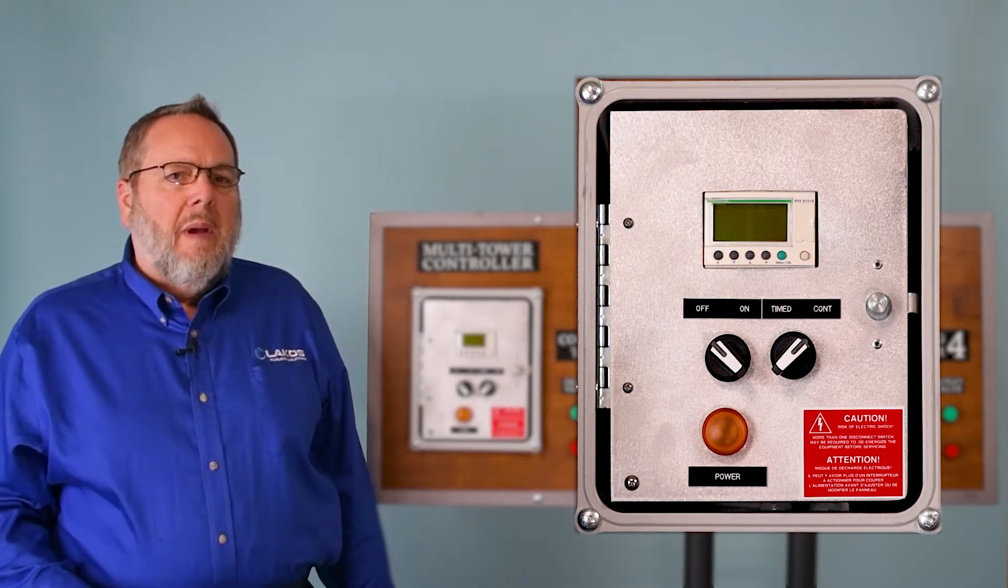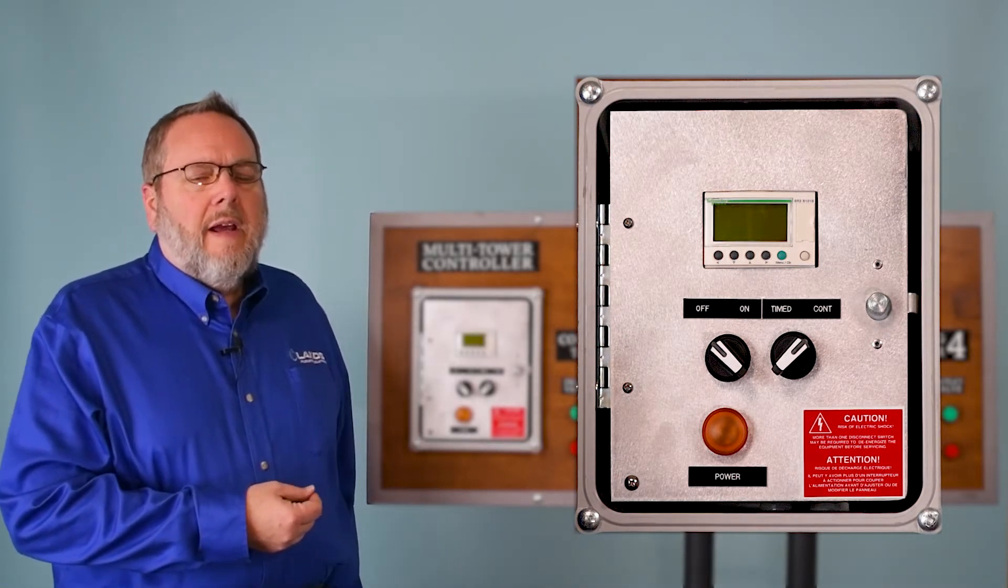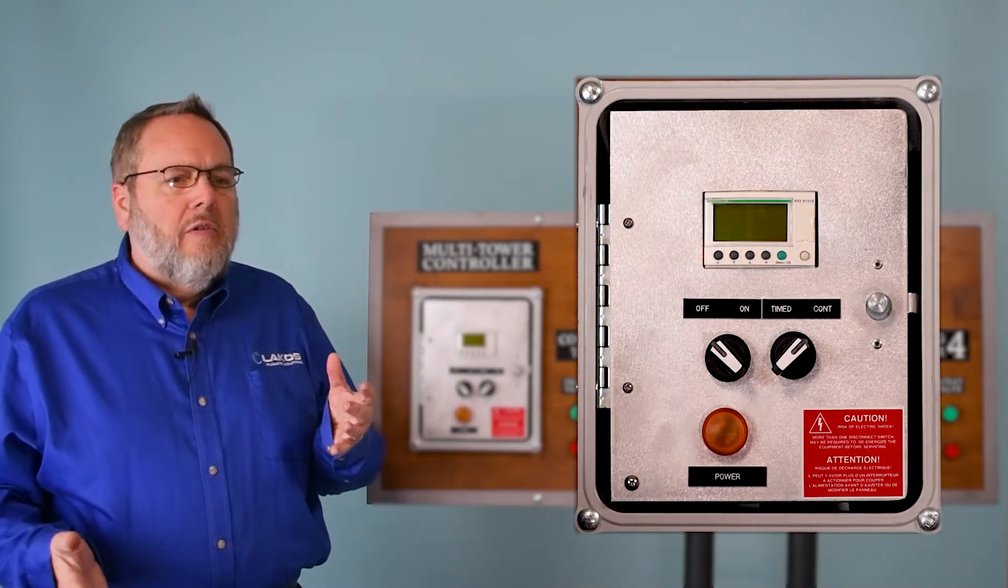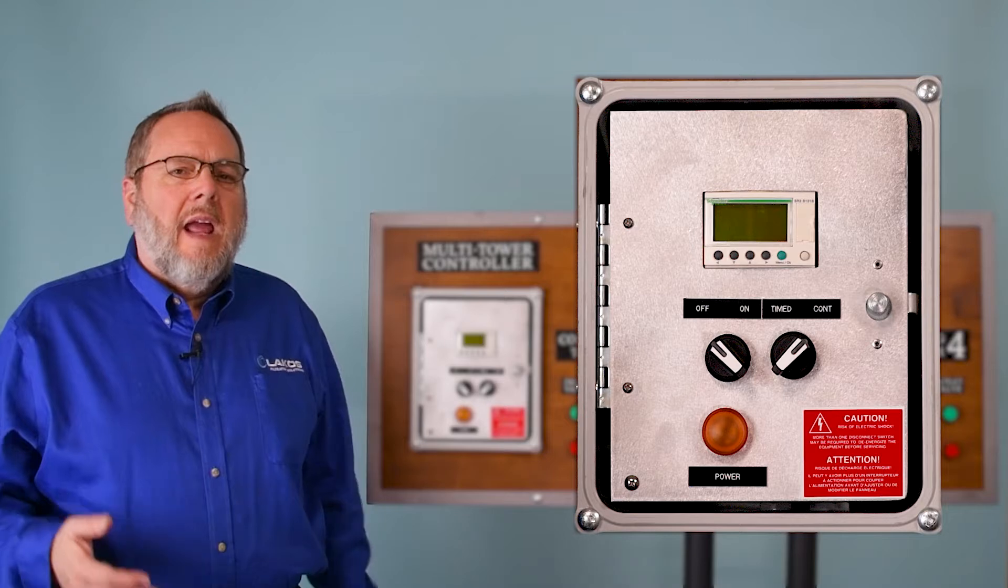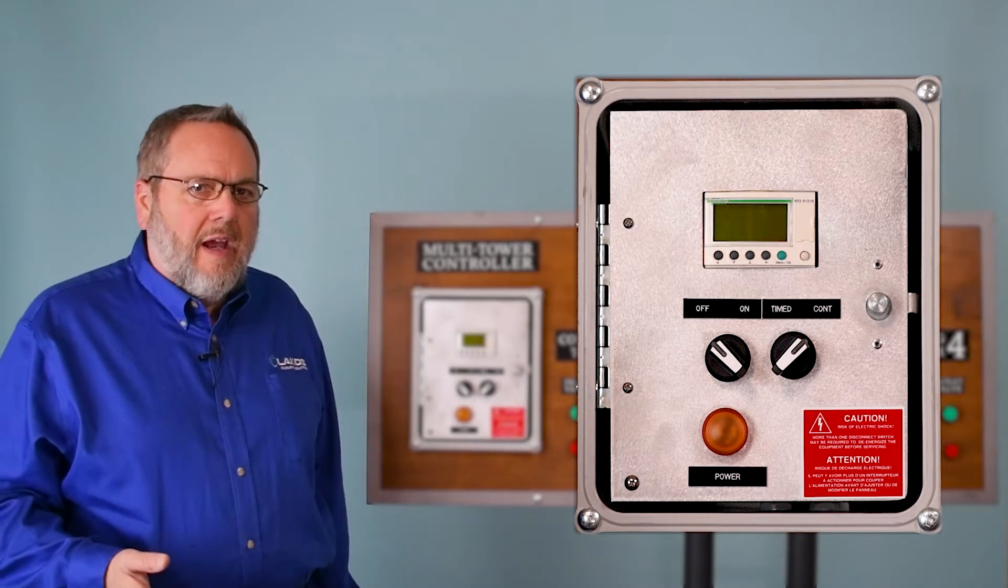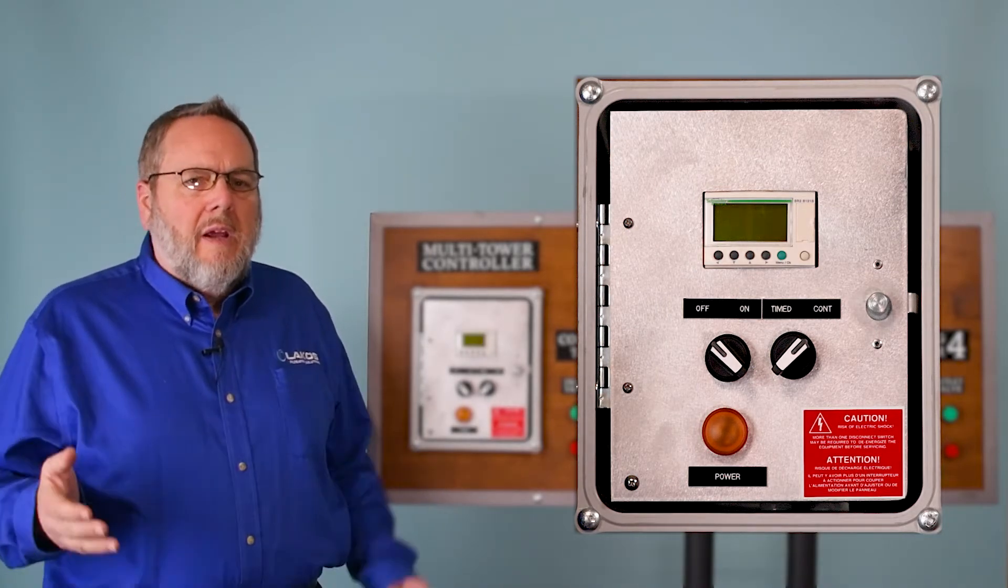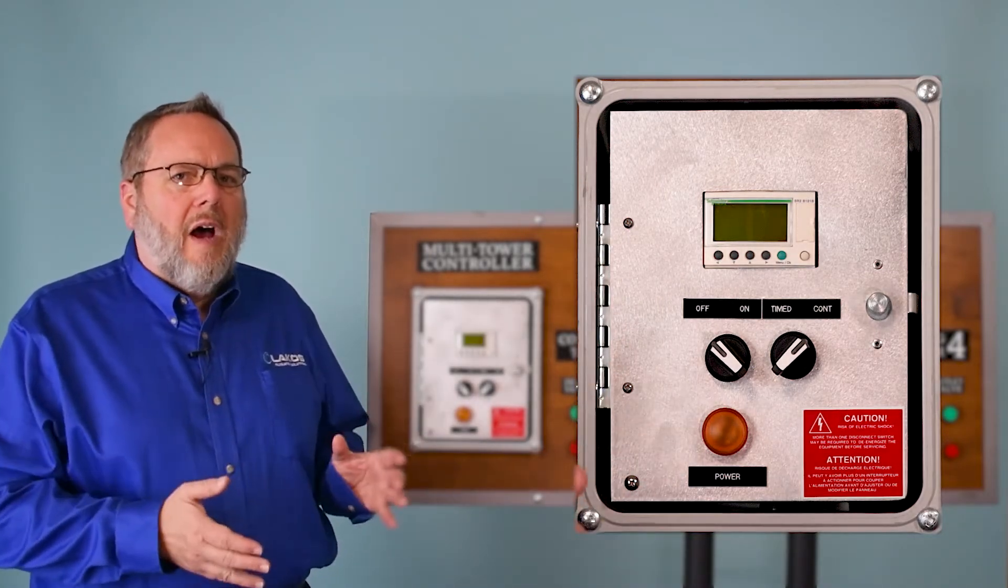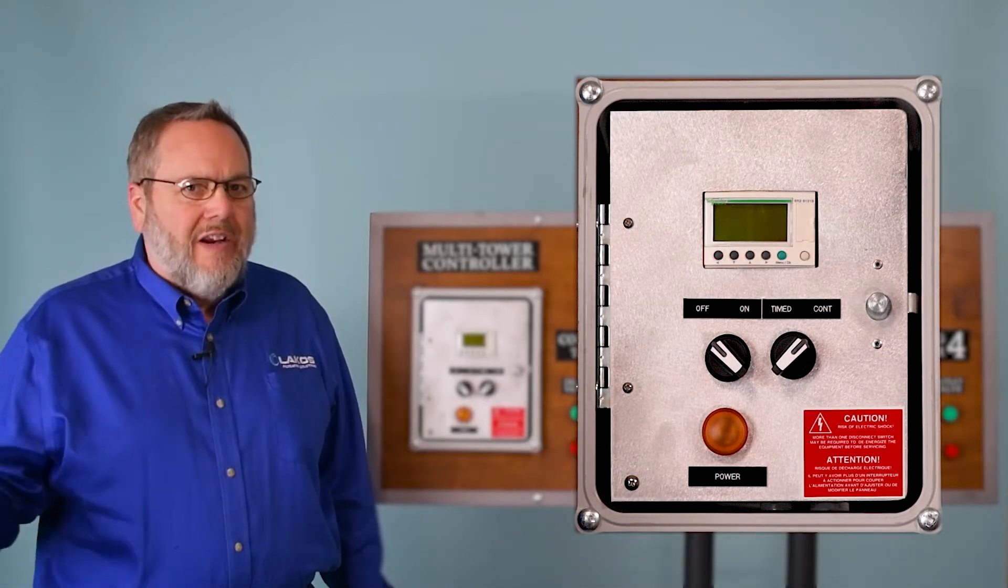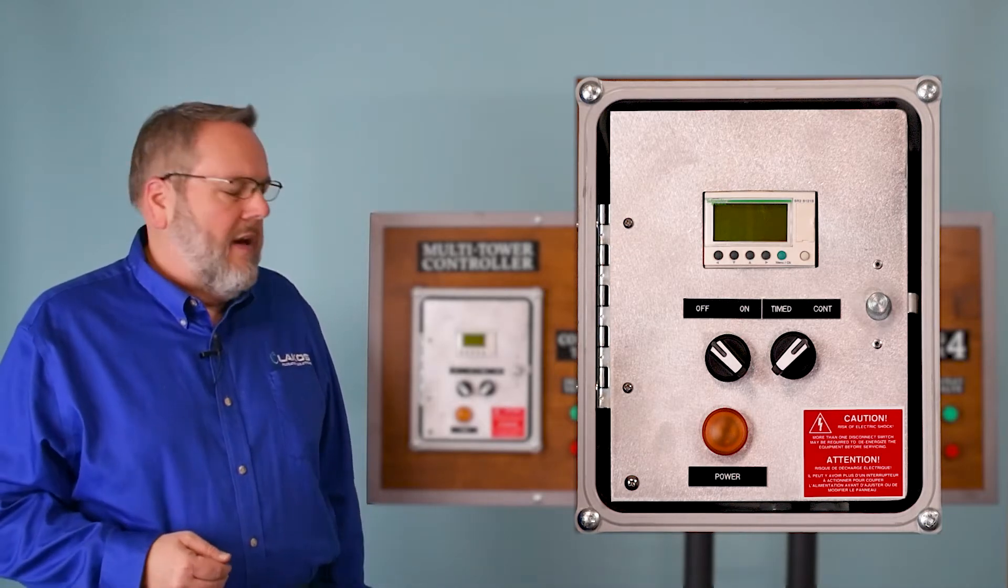A timed function is based on time. So this Xelio relay allows you to program, say, you want the towers, the sweeper to run from 8 a.m. in the morning to 5 at night and then turn off until the next day. That's what the time function will allow you to do. It will allow you to program a time that the unit is running and then it will shut off until the next day or after depending on when you want it to come on next.